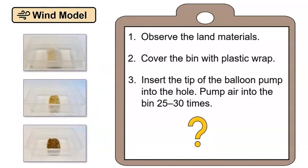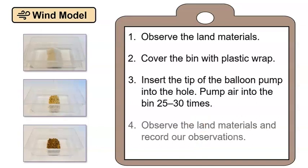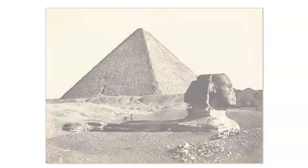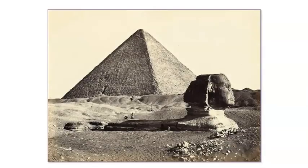Wow! We have a great start to our procedures. What do you think we need to do for our final step? Yes, we will need to observe the land materials to see if there was any change. Let's add this final step to our procedure sheet. We have a great plan to investigate whether wind can change the land. I'm sure our investigation will help us figure out what happened to the Sphinx. I can't wait to investigate with you next time.